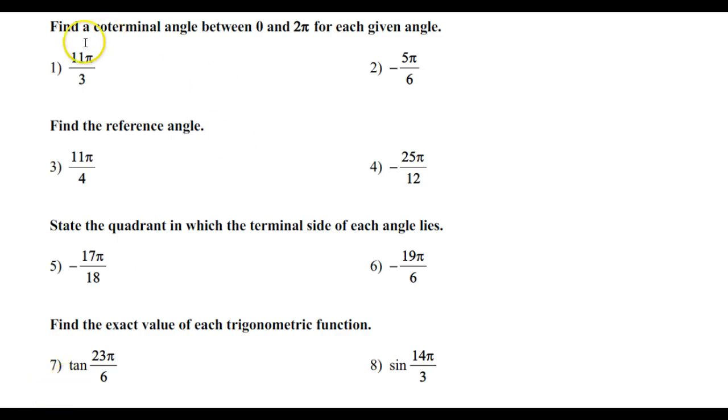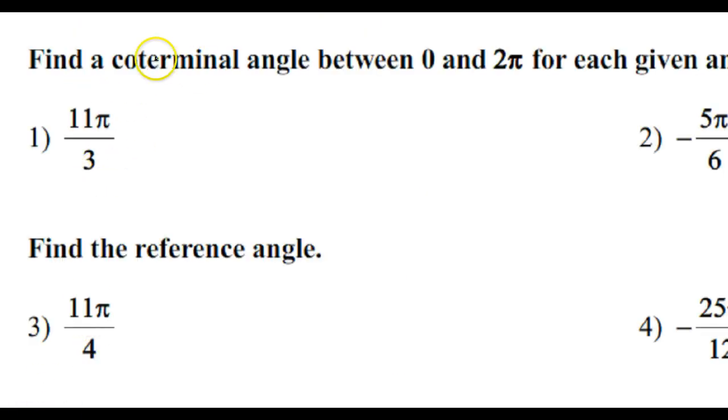In this lesson, we will learn how to find a coterminal angle between 0 and 2π for each given angle. When you see coterminal angle, you should be thinking we're probably going to add or subtract 2π.